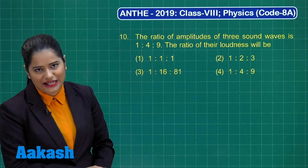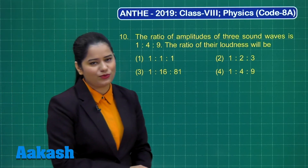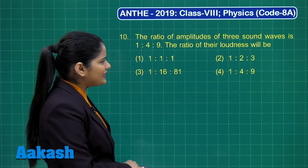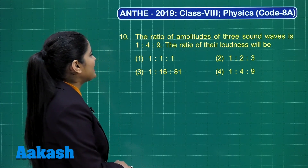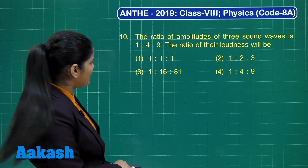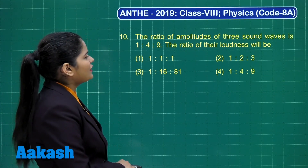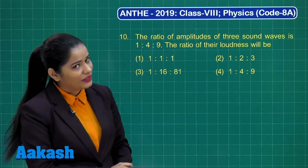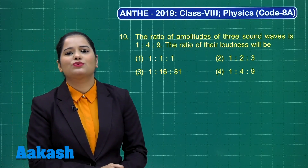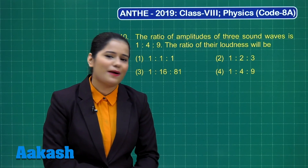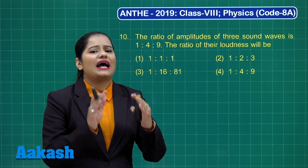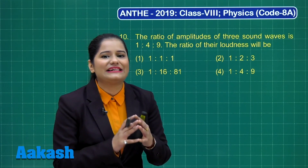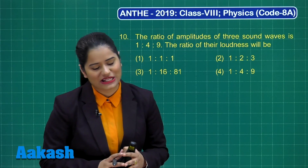Question number 10 says the ratio of amplitudes of three sound waves is in the ratio 1:4:9. The ratio of their loudness will be — we know the relation between intensity and amplitude, and we know that the loudness is determined by the intensity of a sound wave.